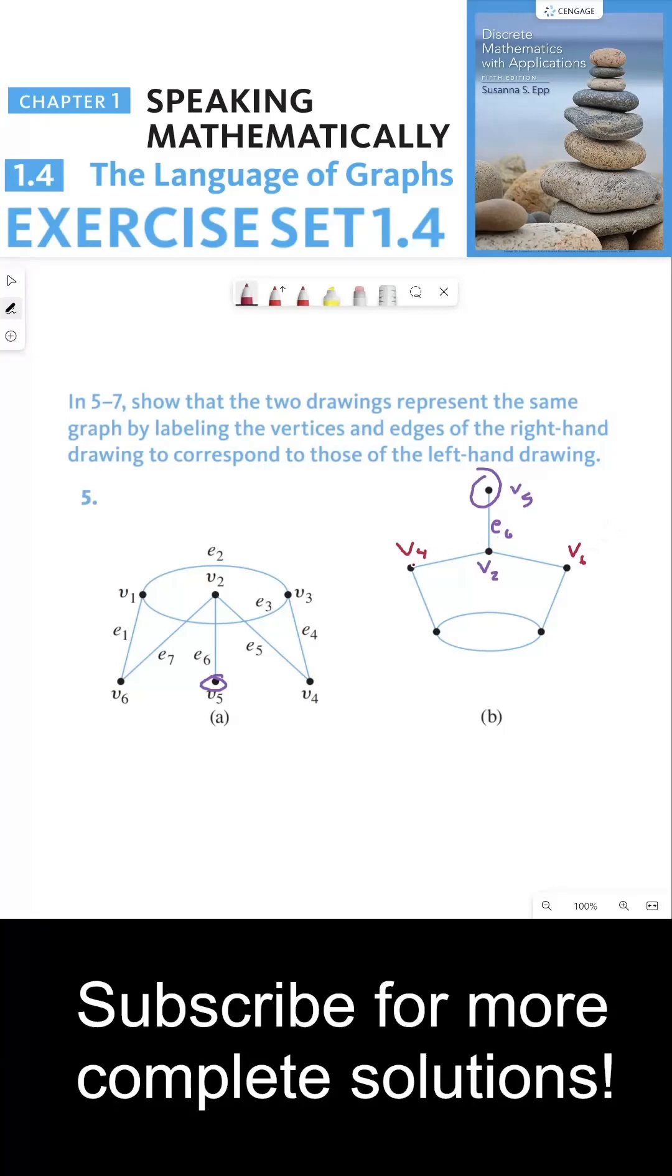I picked v4 over here, which means that this edge has to be e5. I picked v6 over here, which means this edge needs to be e7. And from here we keep working. v6 is connected to v1, that's the only other vertex it's connected to, and that's via edge 1.